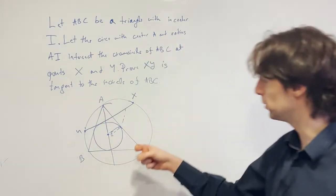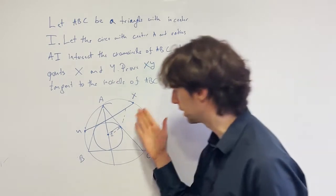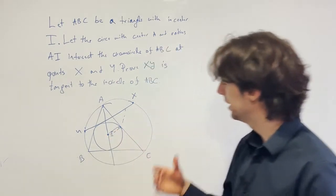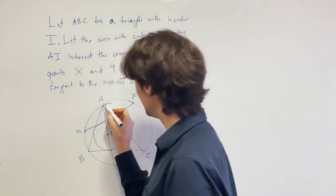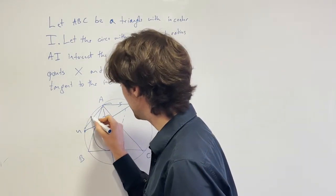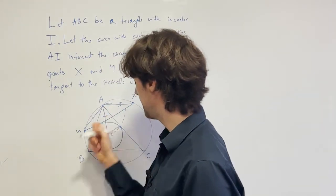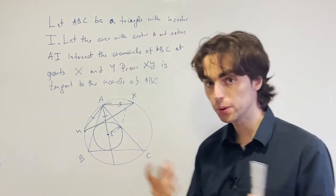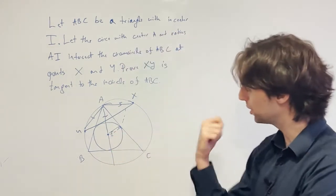Okay, so the first thing we do is we draw a diagram. We have X, Y, I, and it's not a simple problem. It doesn't seem like a very simple problem. We have AI, AX, AY. And now how are we going to use this fact? How are we going to connect?